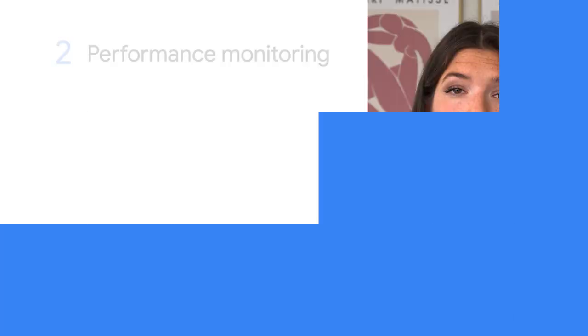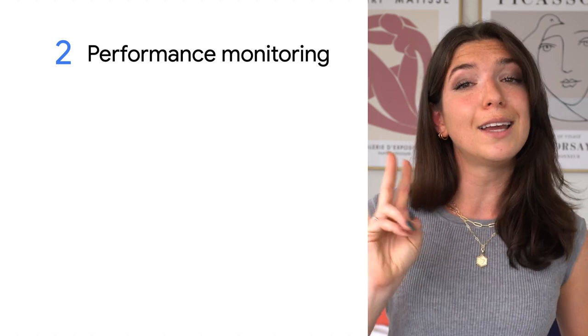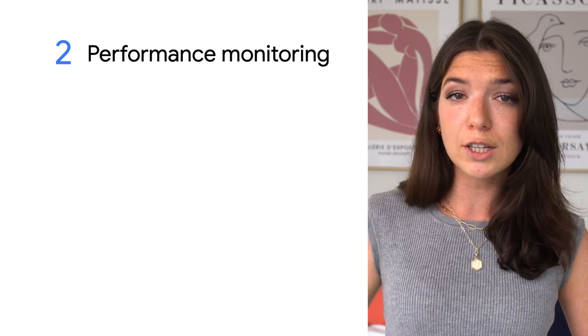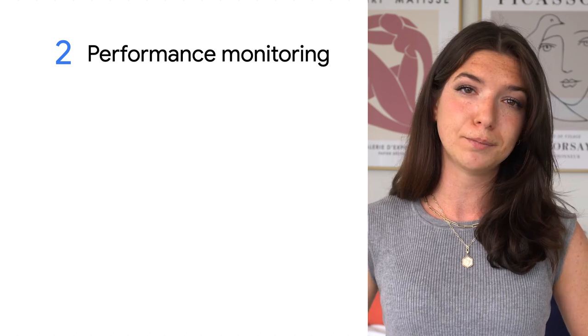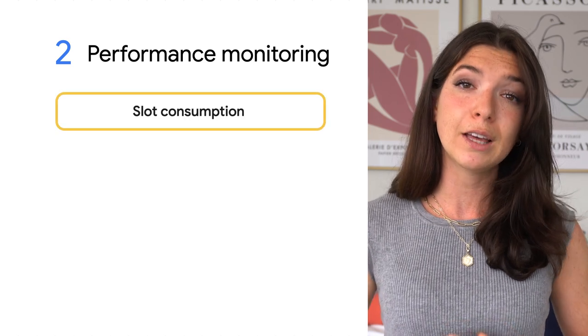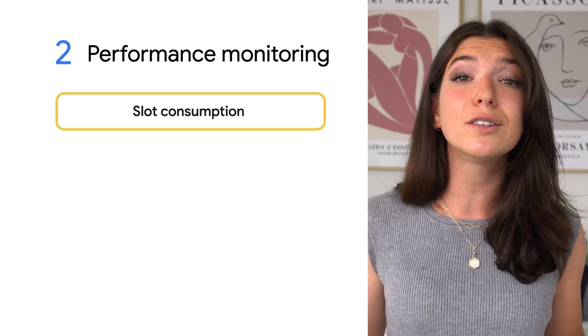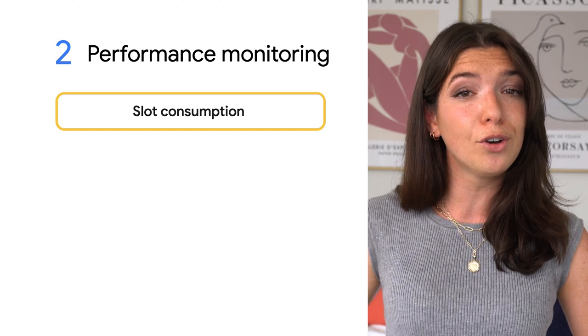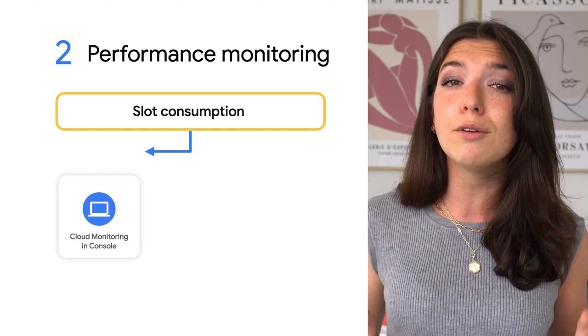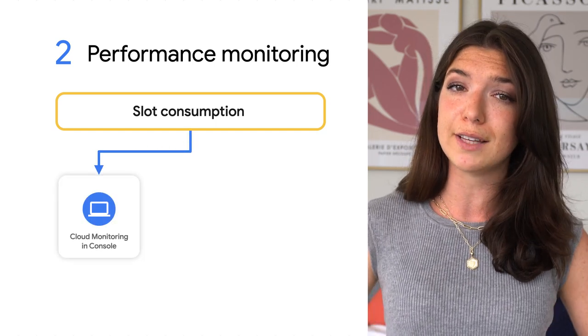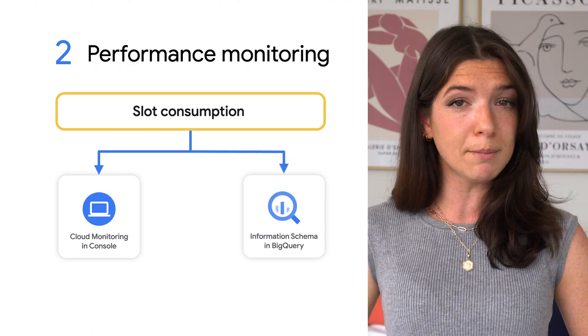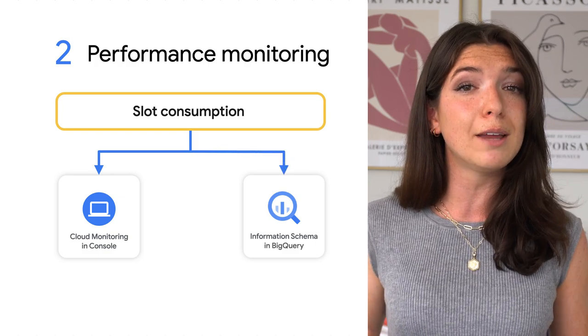Now, if you do decide to go with flat rate pricing, you'll need to figure out what reservation size makes the most sense for your needs. This brings us to our second use case: workload management and performance monitoring. You can see how many slots were consumed across different workloads in your organization using the Cloud Monitoring interface or the information schema tables natively available in BigQuery.